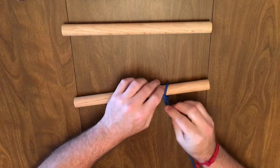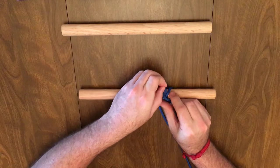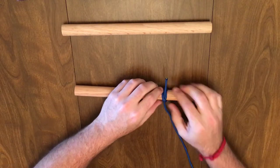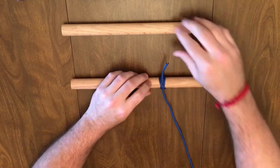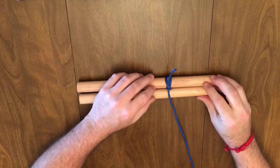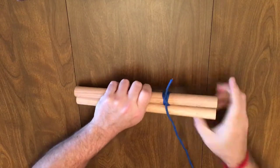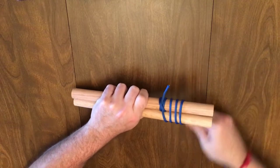Start with a clove hitch around one of the two poles. Then, create eight or more wrapping turns around both poles.